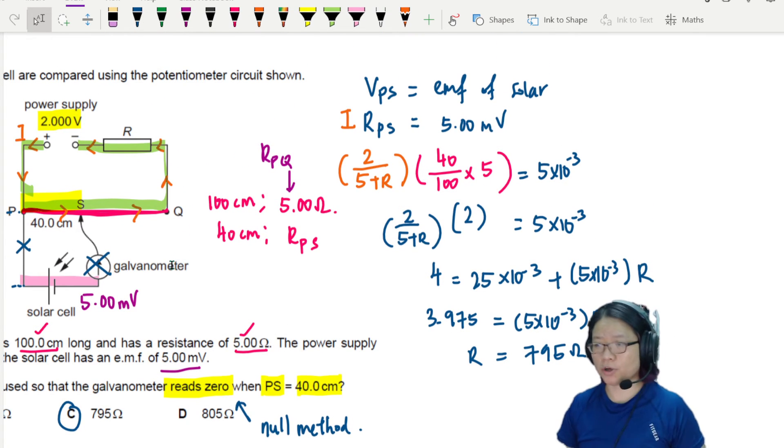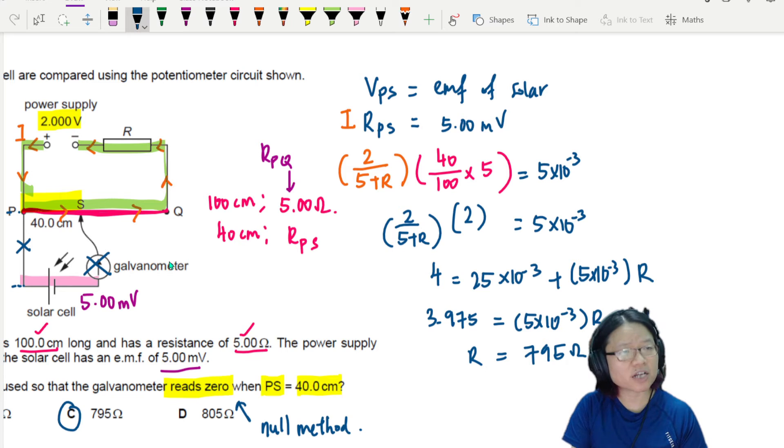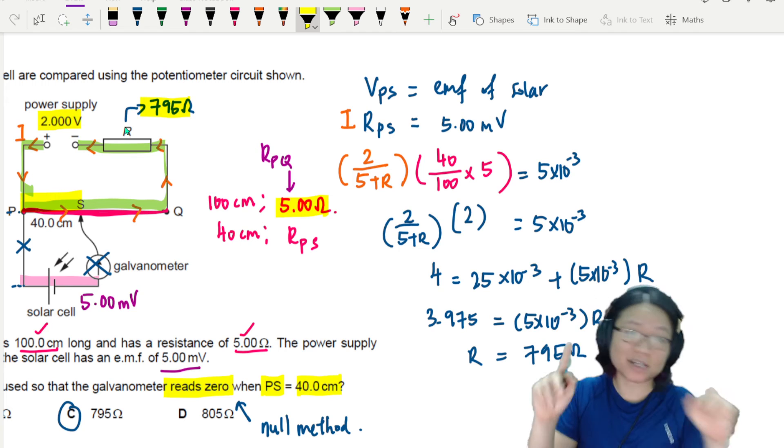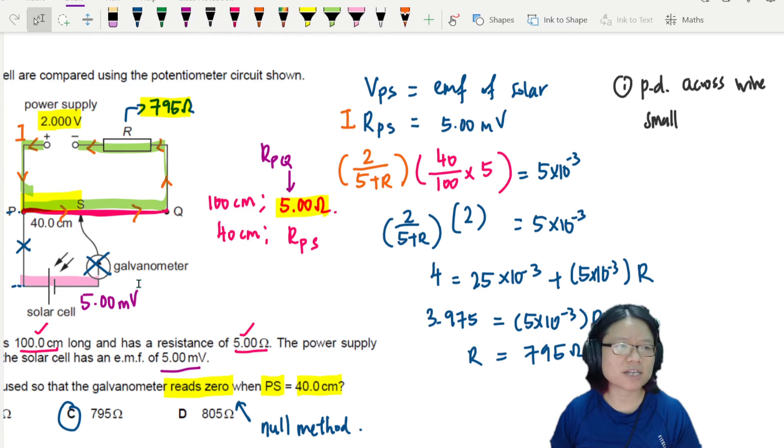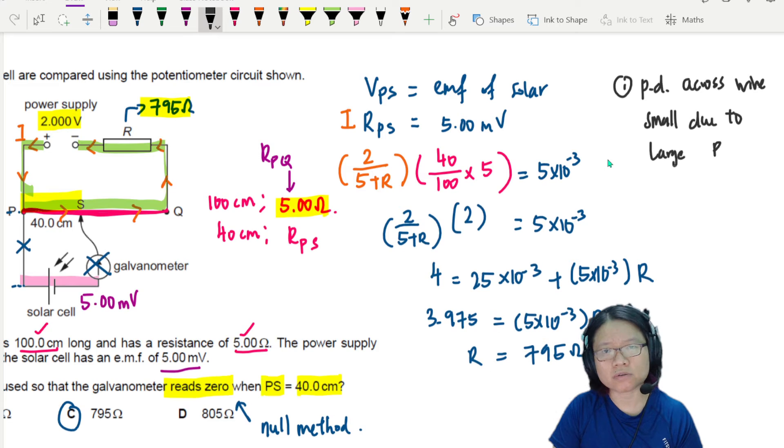Before we move on from this question, there are a few things I want to point out. Number 1, this resistance is very large. This R is 795Ω but the wire is only 5Ω. This means the potential difference across the entire wire is very small. Let's make a few notes here. Number 1, the potential difference across the wire is small due to large R.